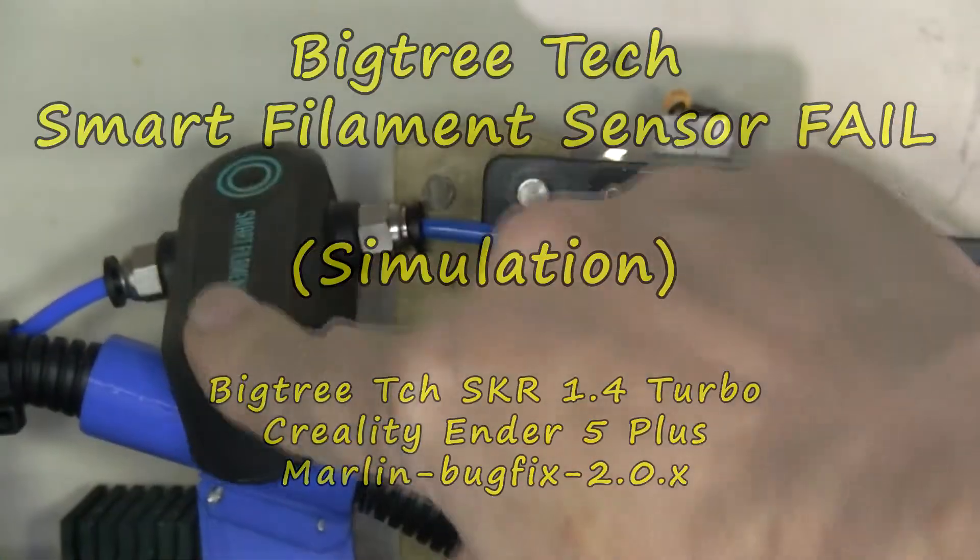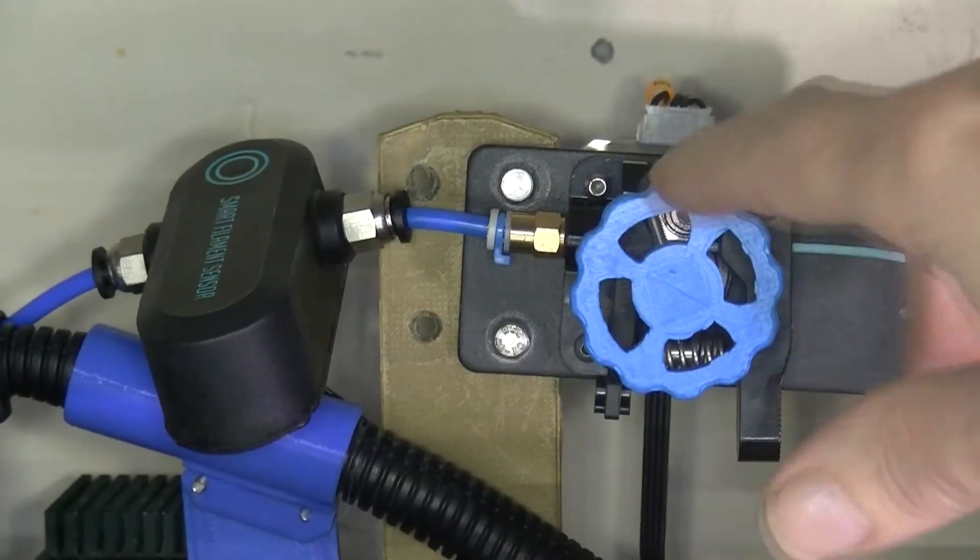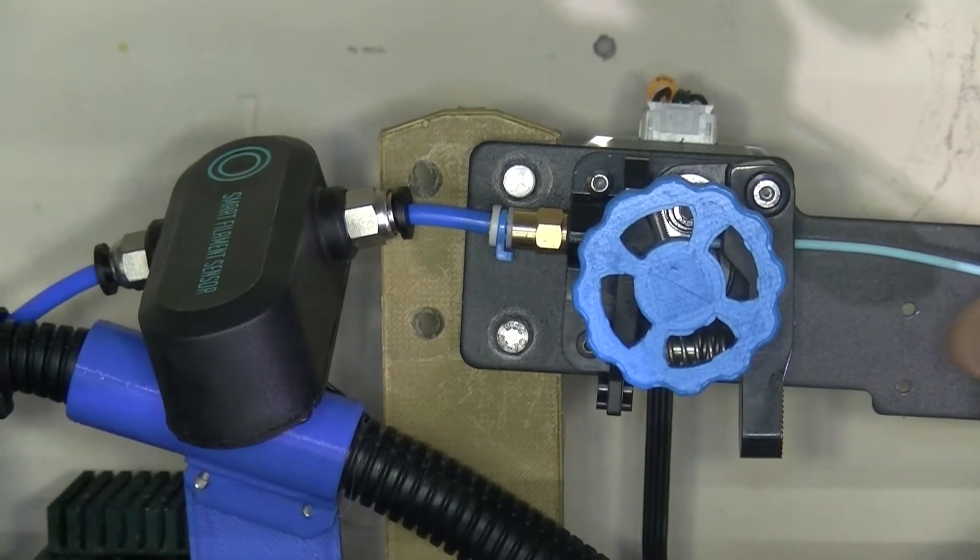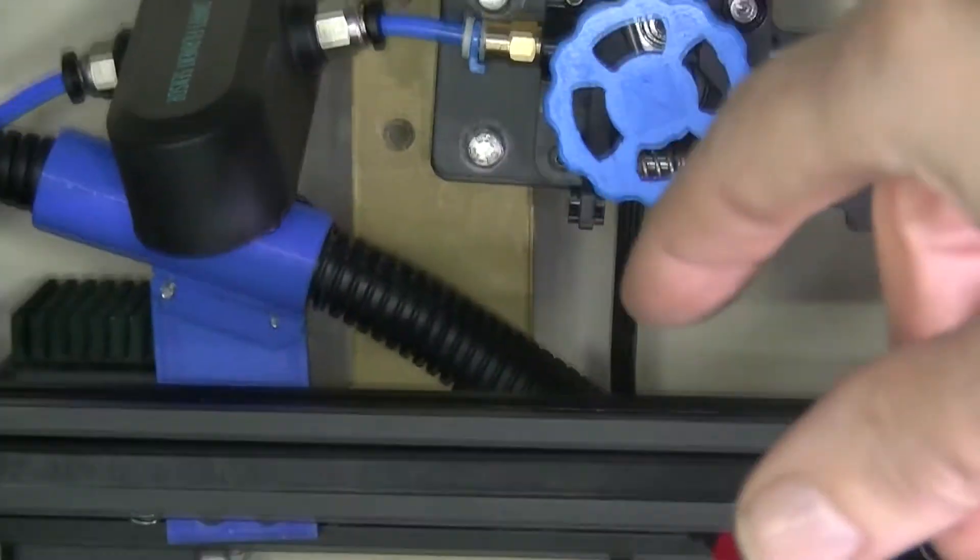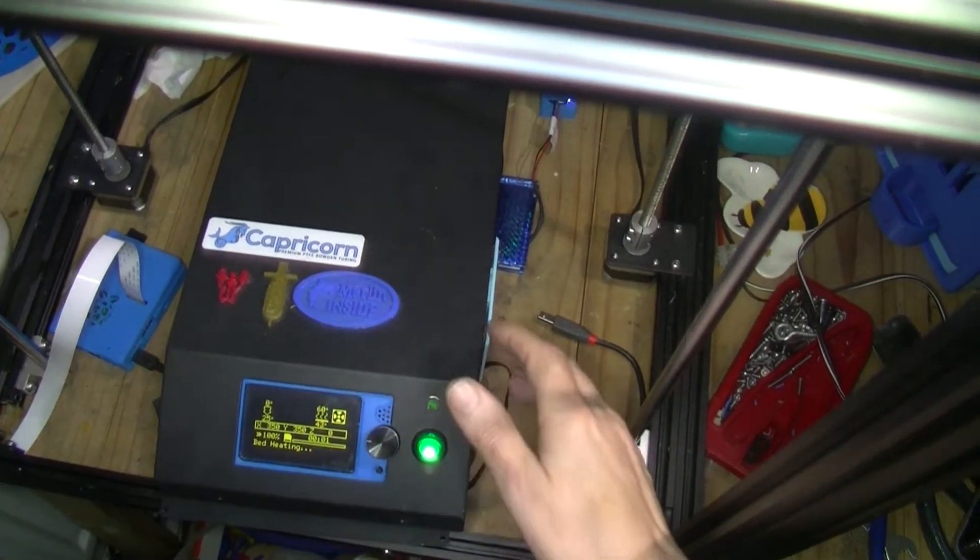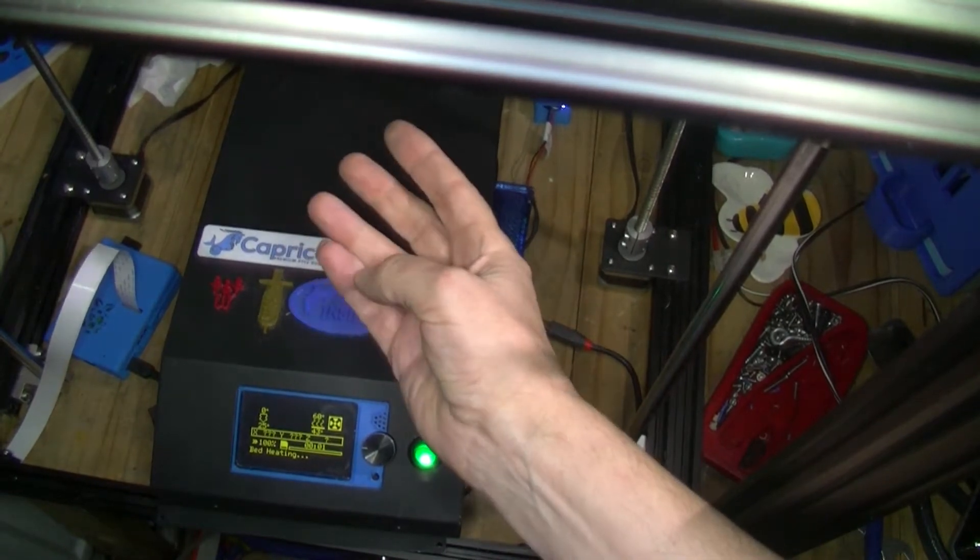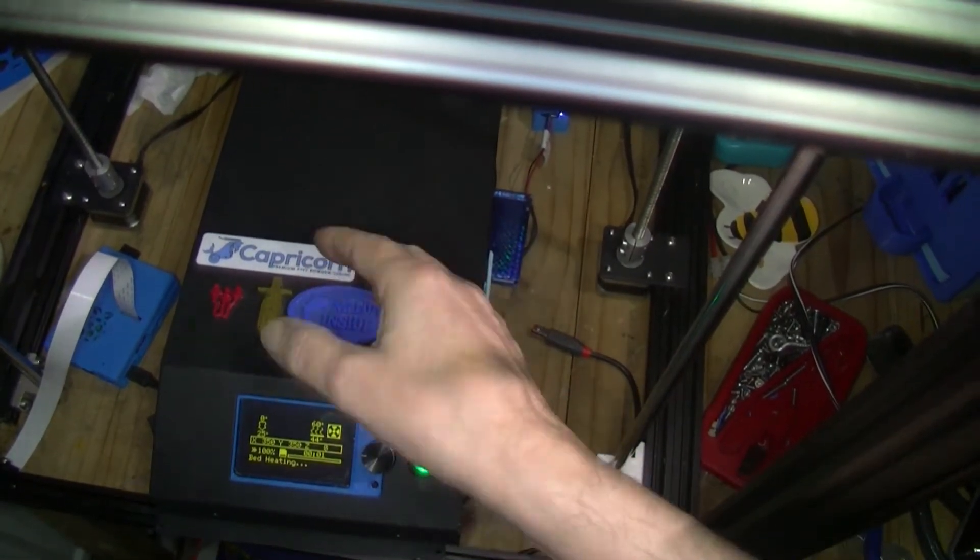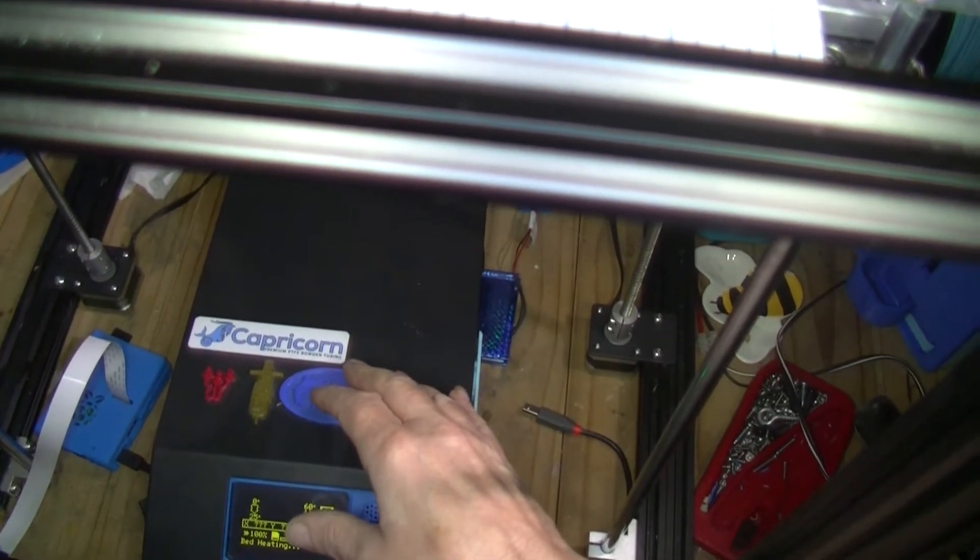So I fitted this smart filament sensor here - BigTreeTech. Removed the old filament runout detector. I had to extend the wires on this to fit my Creality Ender 5 Pro Plus. Still haven't put the box totally together. I just used some LAN wires from an old LAN cable - three wires connecting to the same three wires. Plugged it in, no changes in the plug orientation or anything. The connectors just plugged straight in.